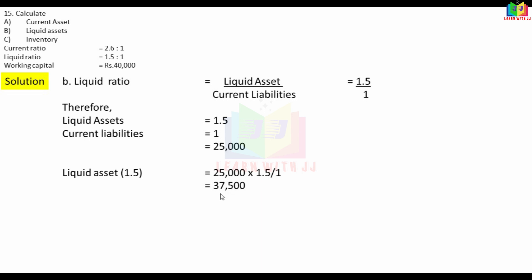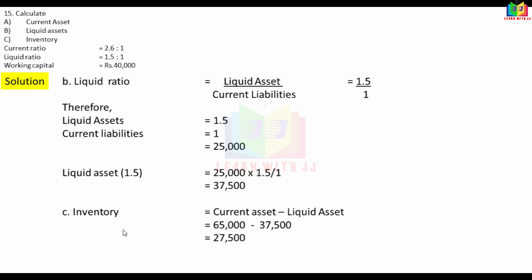We know current assets. Liquid assets are current assets minus inventory. Current asset is 65,000. Liquid asset is 37,500. So inventory is 65,000 minus 37,500 = 27,500. This is the inventory value.